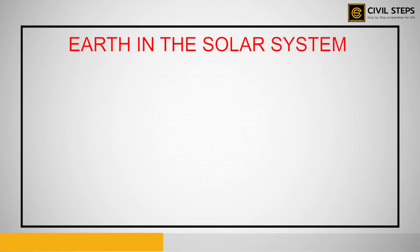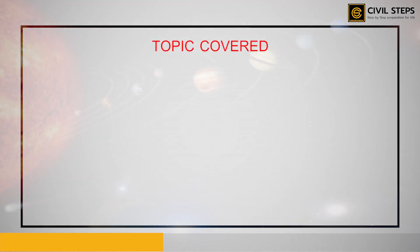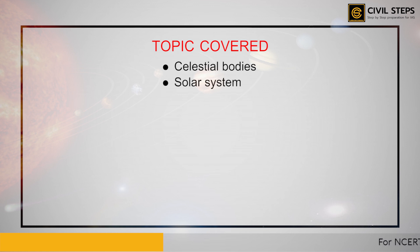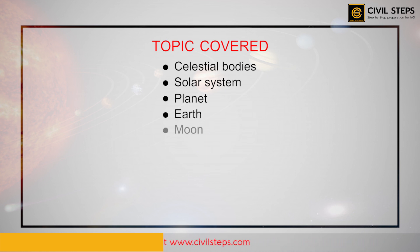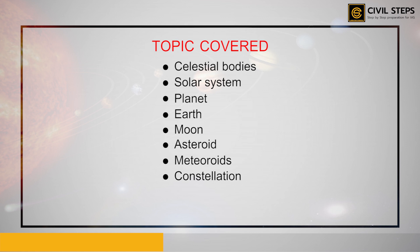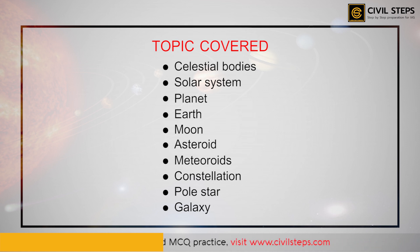The topic of discussion will be Earth in the Solar System. We are going to discuss the concepts of: first, celestial bodies; second, the solar system; third, planets; fourth, Earth; fifth, Moon; sixth, asteroids; seventh, meteoroids; eighth, constellations; ninth, pole star; and lastly, the galaxy. These are the different concepts that we will be learning about in this particular session.